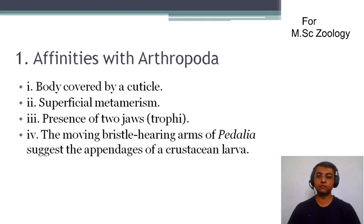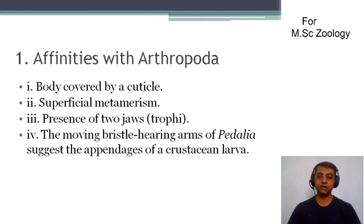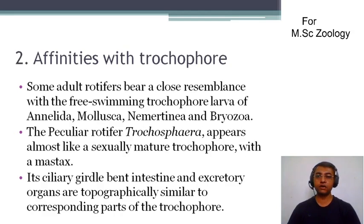Second is the superficial metamerism — the body looks like there is metamerism, but that is not true metamerism, as is found in Arthropoda. Third is the presence of two jaws, those are known as the trophi. And fourth, the moving ciliated arms of rotifer suggest the appendages of crustacean larva. So these are the affinities with Arthropoda.